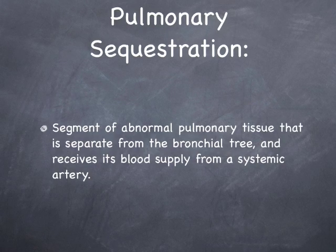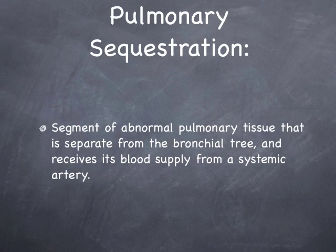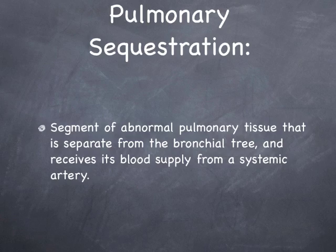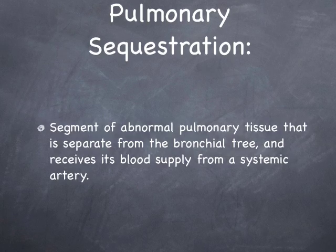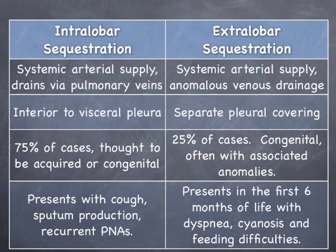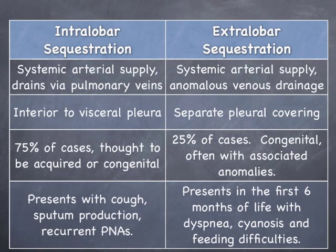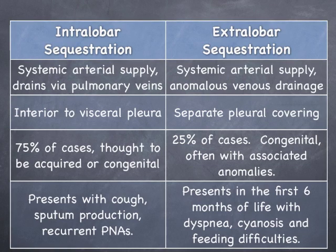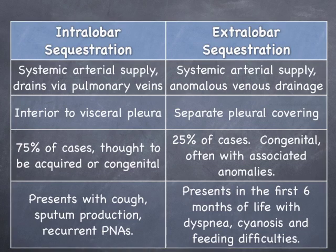This condition was first described in 1946 by Dr. Price, who categorized the anomaly into intralobar and extralobar types. Intralobar sequestrations are the most common form. These receive their arterial supply from the systemic circulation but have normal venous drainage. The segment of abnormal lung is found within the visceral pleura, unlike the extralobar types, which have their own pleural covering.